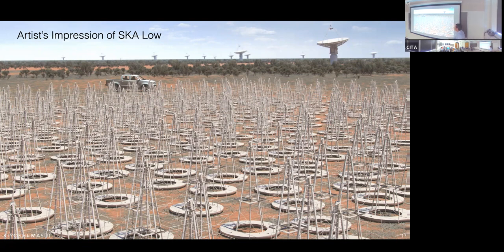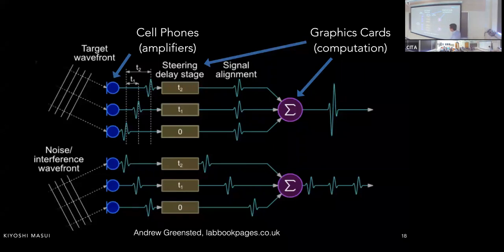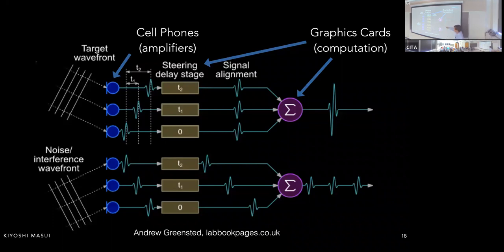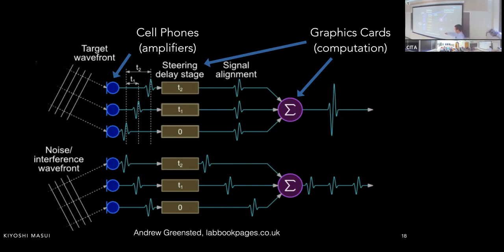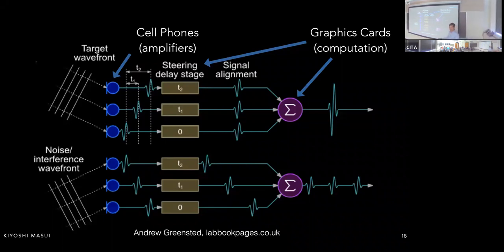This is called beamforming. You have an array of antennas, each digitizing the signal. For an incoming wavefront you want to observe, each antenna sees the light with a different delay. You apply a steering delay to line up all the signals and sum them — getting constructive interference, effectively pointing your telescope. For a different wavefront you don't want, the same steering delays produce destructive interference. Crucially, with no moving parts, you can duplicate this process in software and point your telescope in as many directions simultaneously as you like.